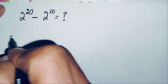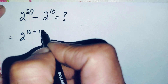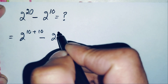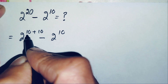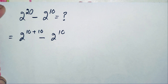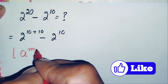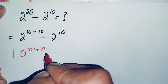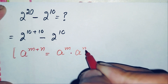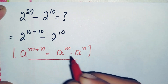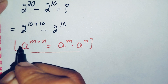So we can write 2 raised to power 20 as 2 raised to power (10 plus 10), minus 2 raised to power 10. In this first term we use the exponential identity: a raised to power m plus n equals a raised to power m times a raised to power n.